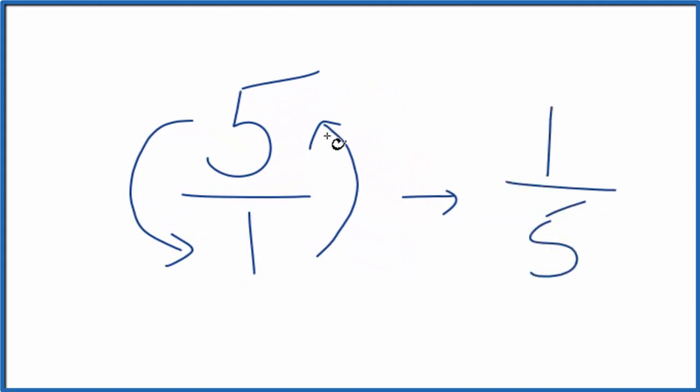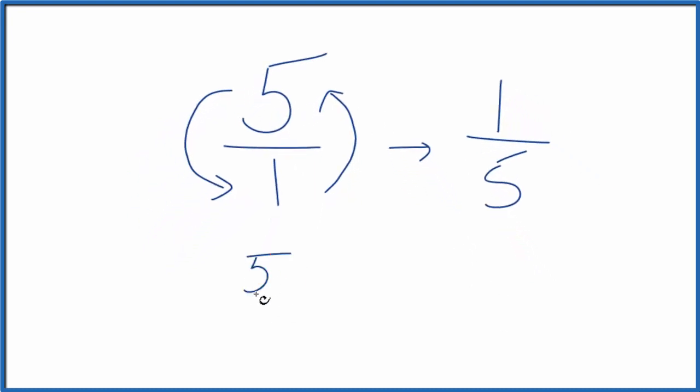The reciprocal for 5 is 1 fifth. And we can check this. We could take the original number, 5 over 1, and multiply it by its reciprocal, 1 over 5. If we get 1 when we multiply these two numbers together, we'll have done it correctly.